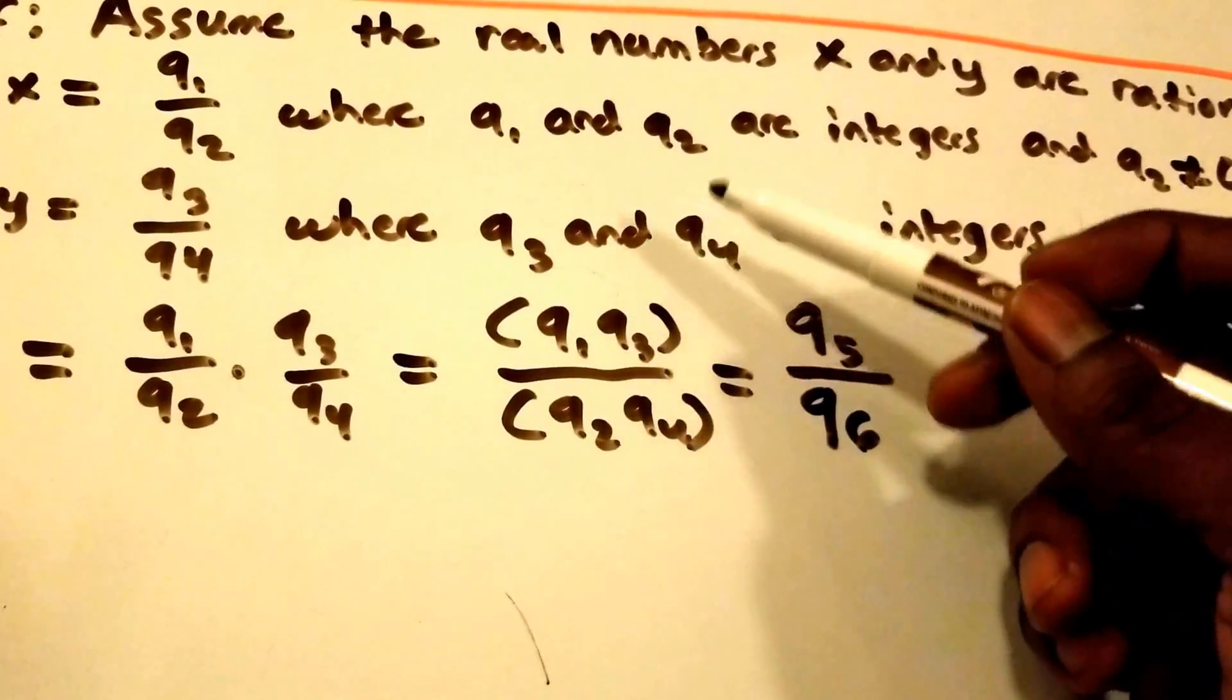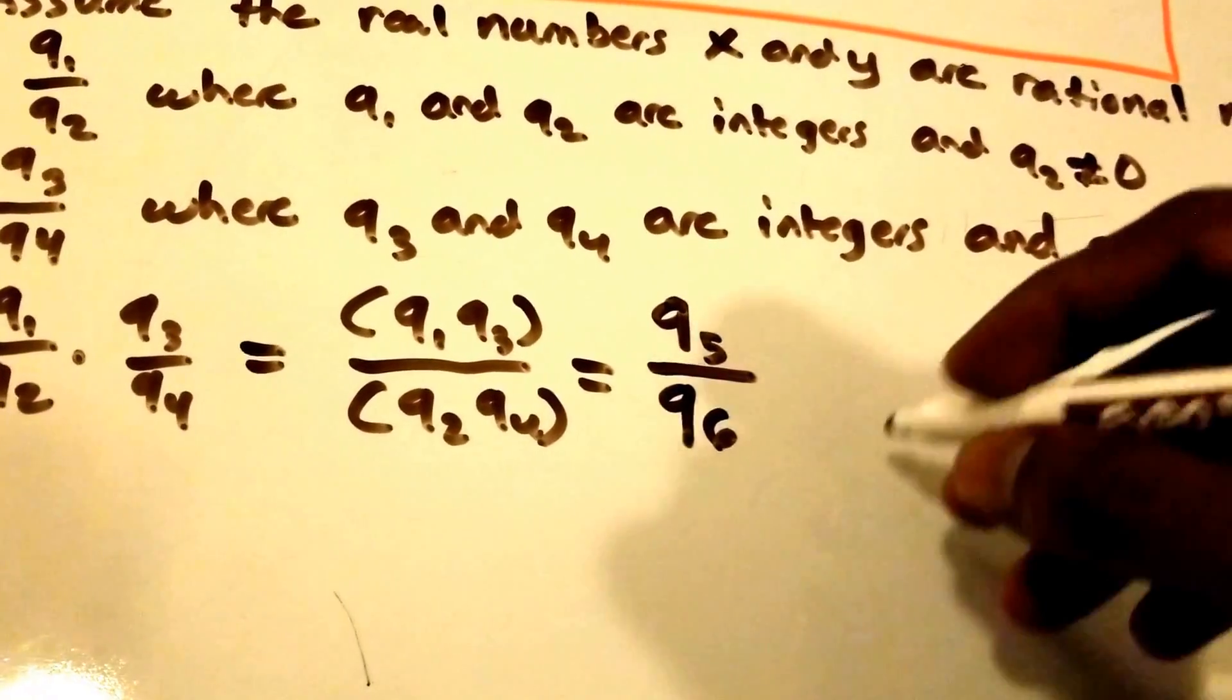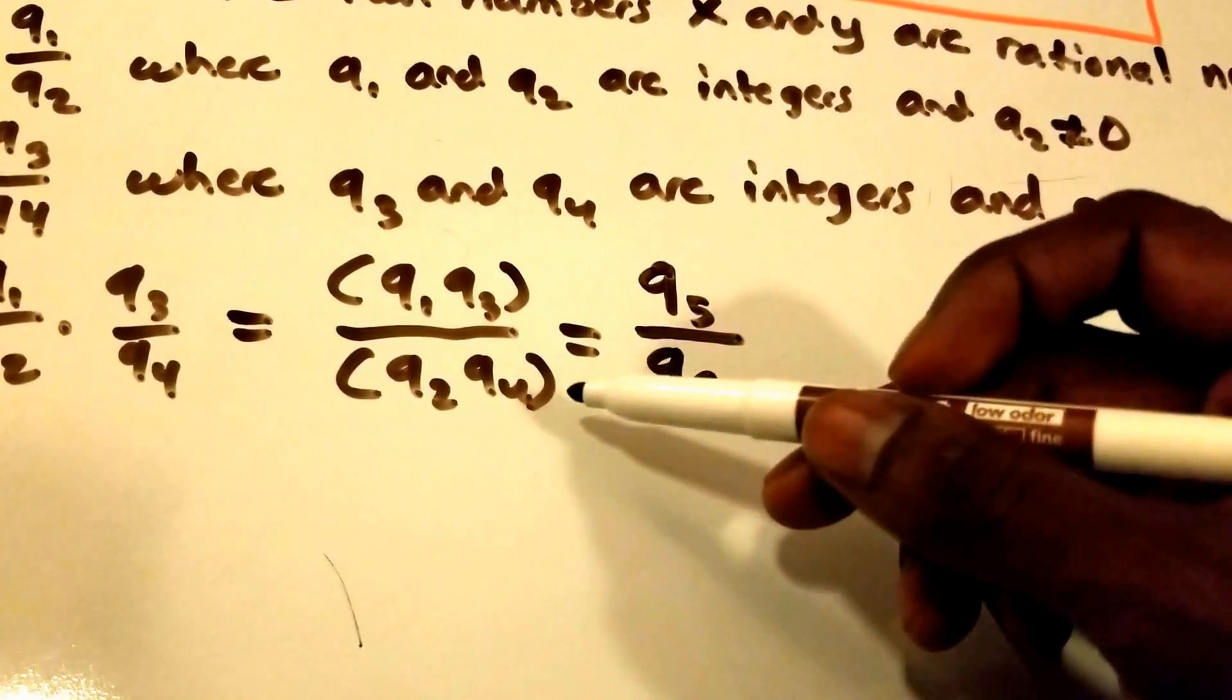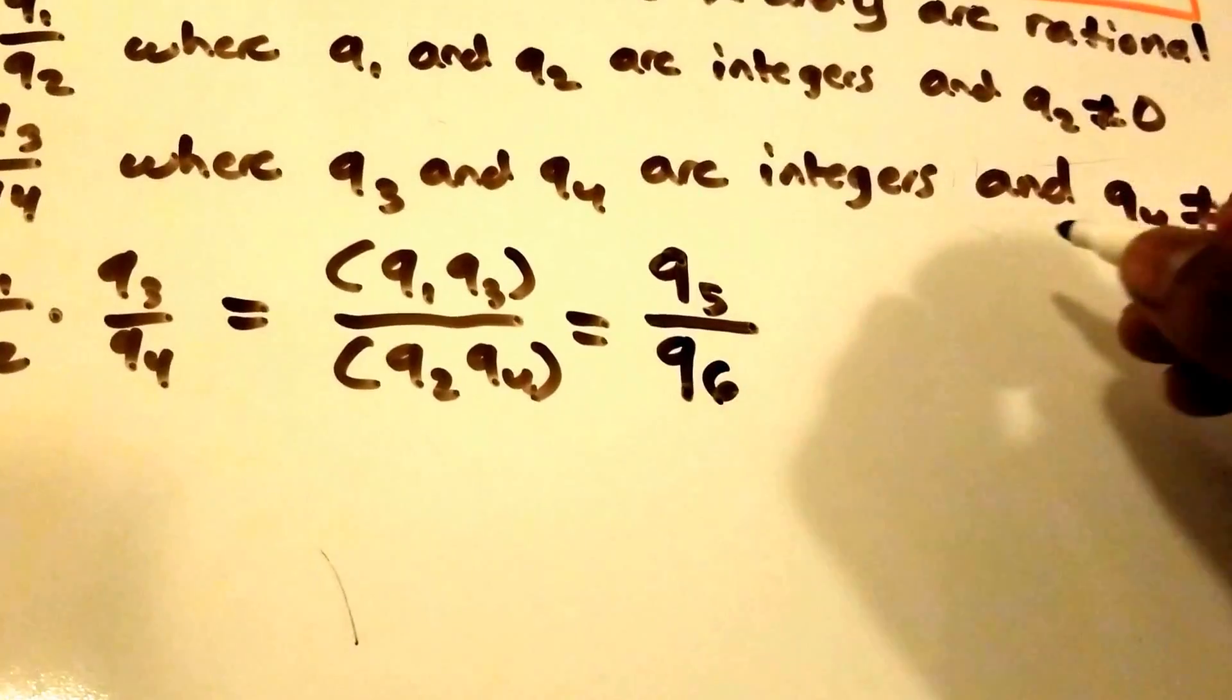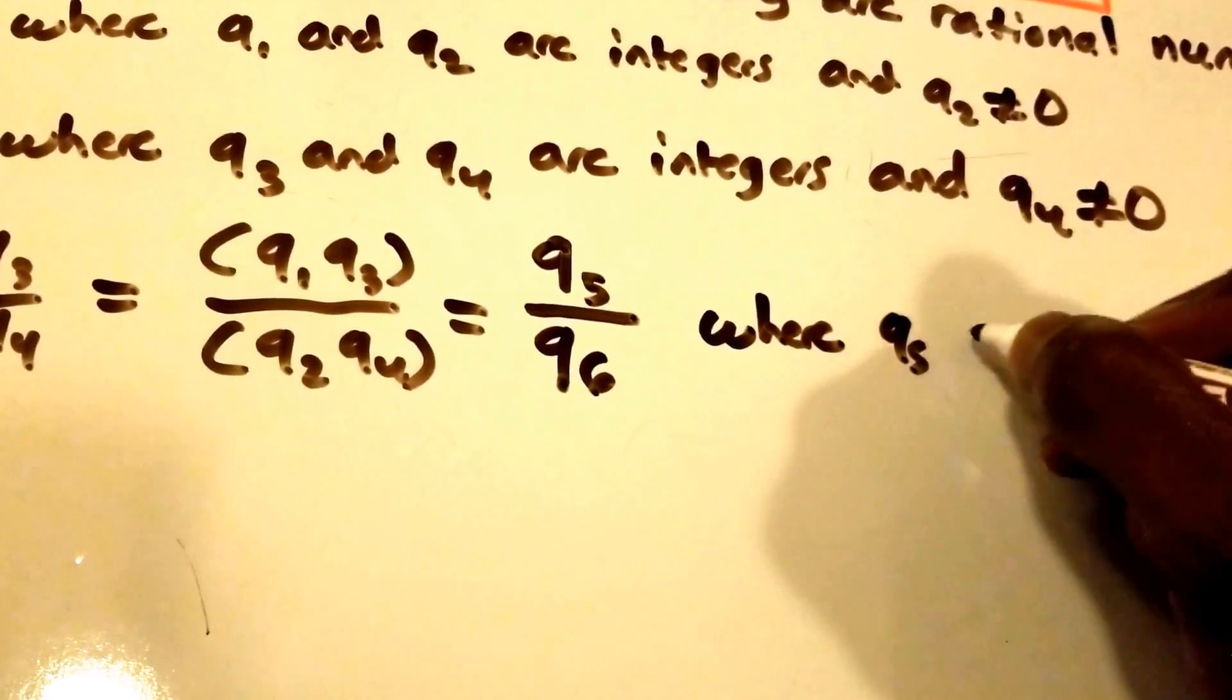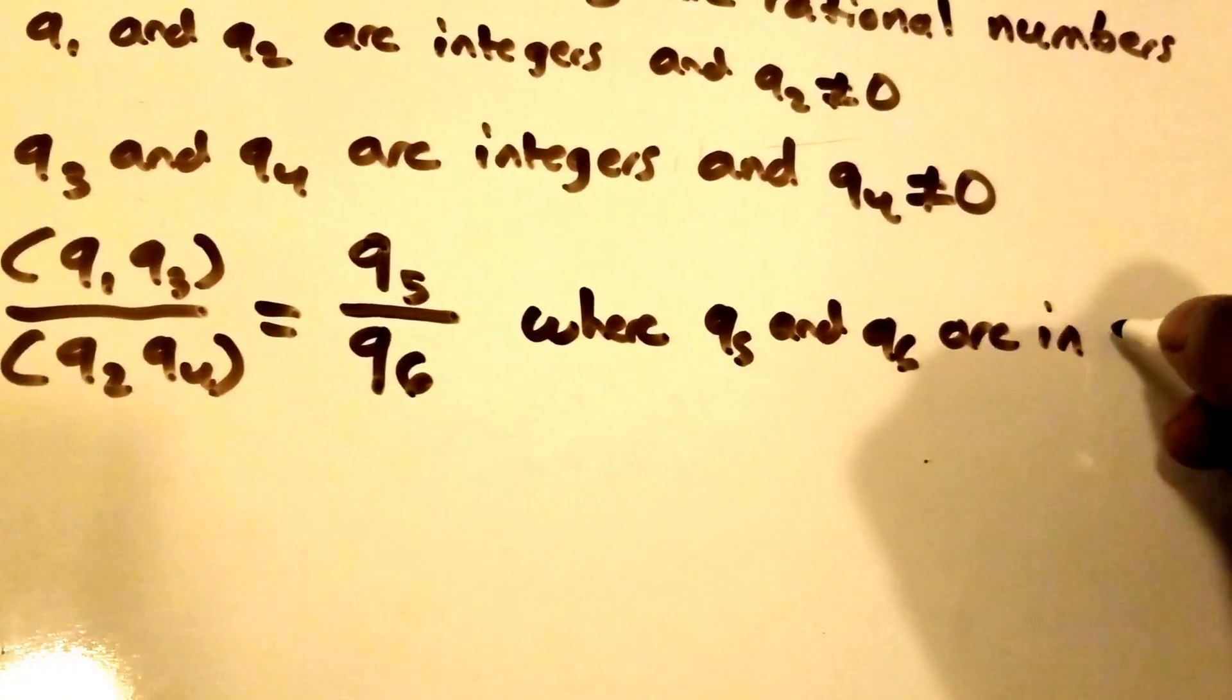And specifically we know that q6 does not equal 0 because q2 and q4 do not equal 0. So this right here is where q5 and q6 are integers and q6 does not equal 0.